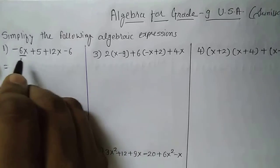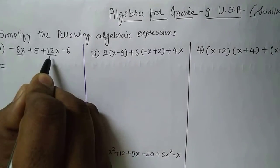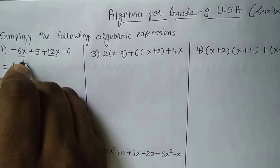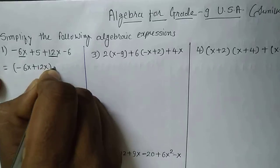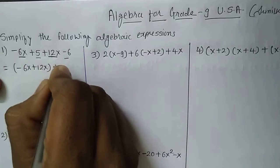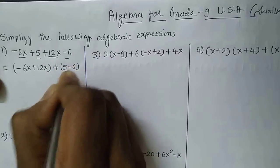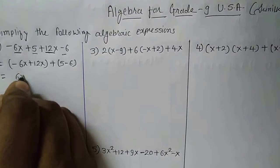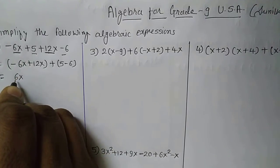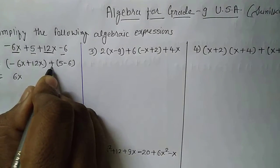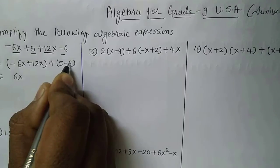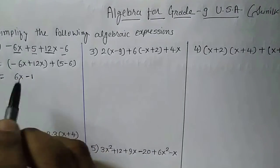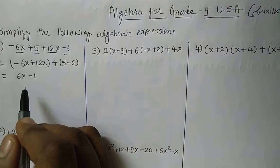Here you can see this is minus 6x and this is 12x — these are the x terms. So I will first put the x terms together: minus 6x plus 12x. And I will keep the constant terms in another group: 5 minus 6. Now, minus 6x plus 12x — 12 minus 6 equals 6x, and since the greater term has a positive sign, the answer is 6x. Then plus 5 minus 6 gives minus 1. So the simplified form of this expression is 6x minus 1.